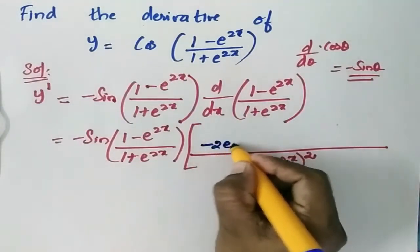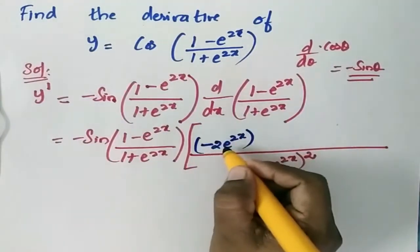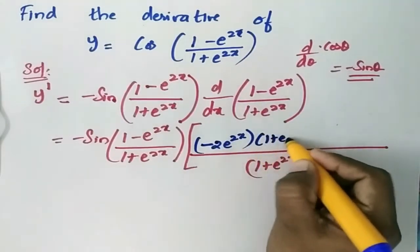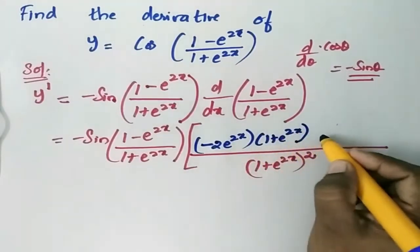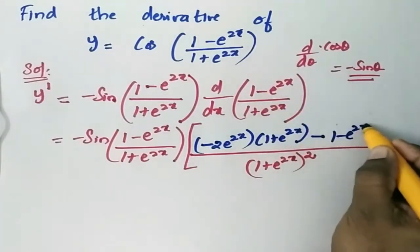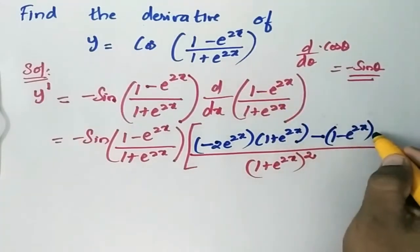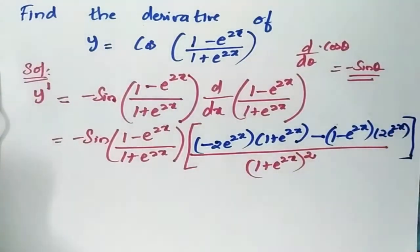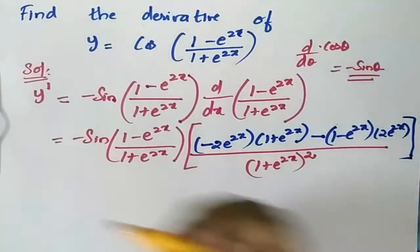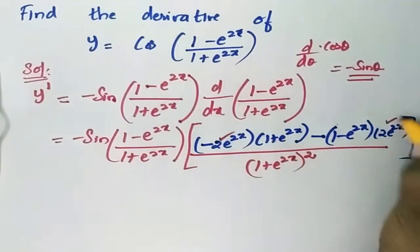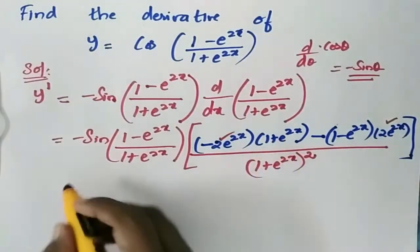Differentiating the numerator gives -2e^(2x). Then we write 1 + e^(2x) for the first term minus (1 - e^(2x)) times 2e^(2x) for the second term. Taking 2e^(2x) as common factor from the expression.